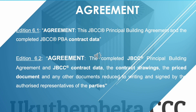Looking at the definition of agreement: Edition 6.1 read simply as 'this JBCC principal agreement and the completed JBCC PBA contract data.' Edition 6.2 reads as follows: 'the completed JBCC principal building agreement and JBCC contract data, the contract drawings, the price document, and any other documents reduced to writing and signed by the authorized representatives of the parties.' It is now quite longer and includes certain additional documentation by express reference.